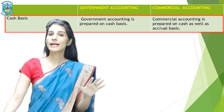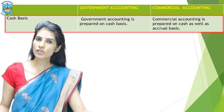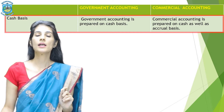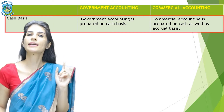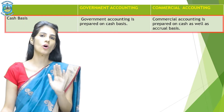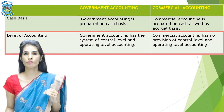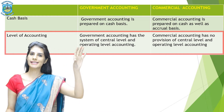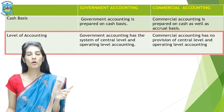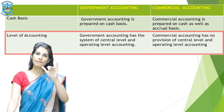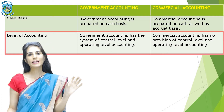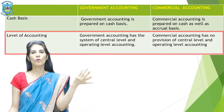Moving on, the next point is Cash Basis. Commercial Accounting can be prepared on cash as well as on credit basis. But Government Accounting is prepared only and only on Cash Basis and not on Credit basis. Then the Level of Accounting: the Government Accounting level is central — it is prepared for the State Government and the Union Government. But Commercial Accounting level is not central; it is prepared by each and every proprietor or commercial unit according to their own requirements.